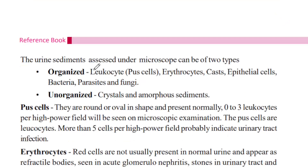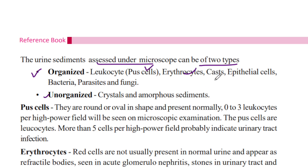The urine sediments can be of two types: organized and unorganized. The organized sediments include cells, casts, epithelial cells, and microorganisms. We also need to check the crystals and amorphous sediments for the unorganized category.